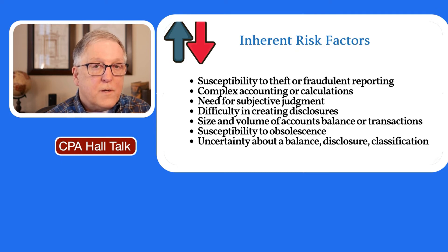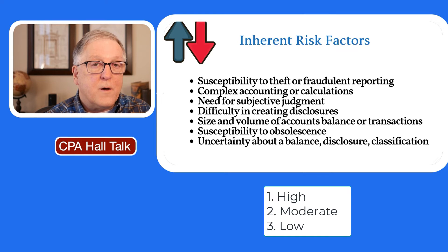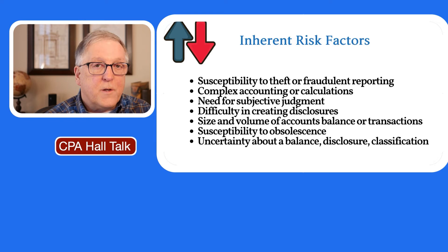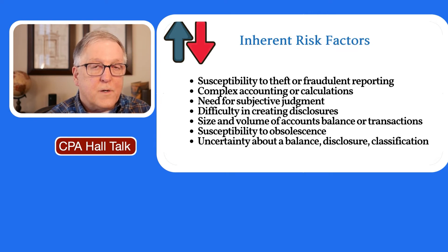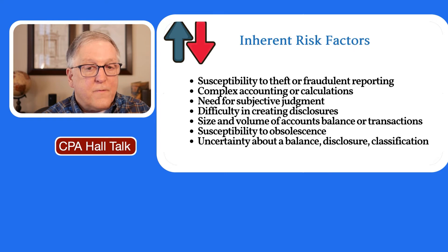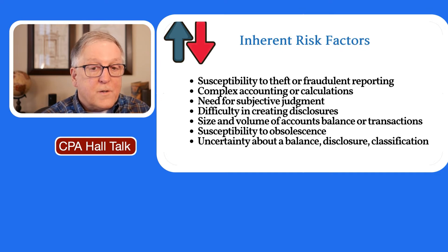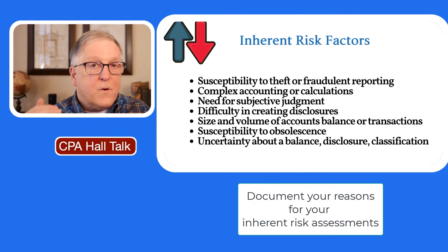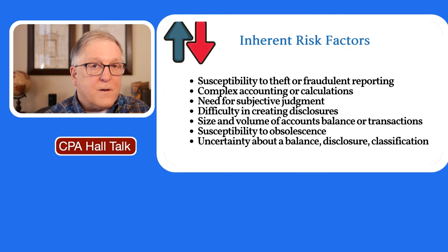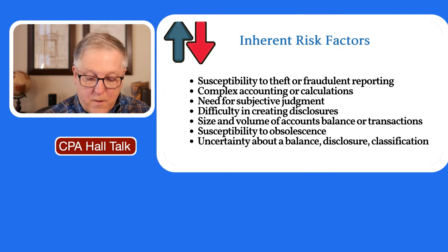Most auditors assess inherent risk, control risk, and the risk of material misstatement at three levels: high, moderate, and low. You can use a scale of 1 to 10 if you want, but most people use these three levels. So as you look at an assertion in a particular account balance — such as the existence assertion for receivables — you're asking yourself: is it complex? Is it subjective? Is it susceptible to theft? Is there uncertainty? As you look at these factors, you determine the inherent risk assessment.